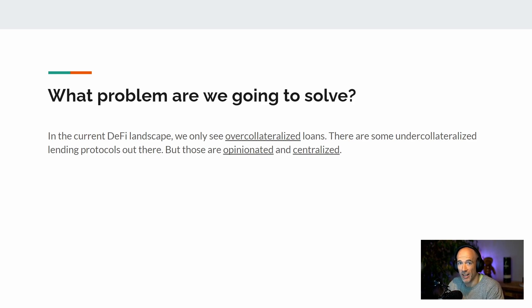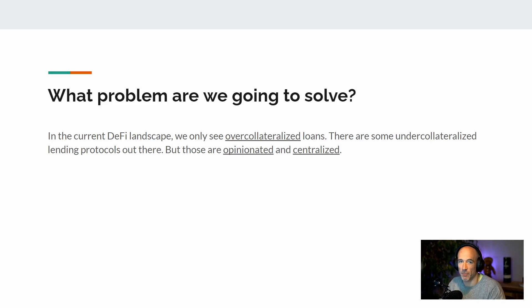There are some under-collateralized lending protocols out there, but these are very opinionated and very centralized because these authorities are assessing your credit risk themselves. And why should one central authority assess our credit risk, especially if we are working on a decentralized platform?